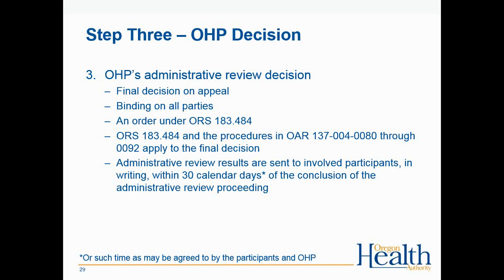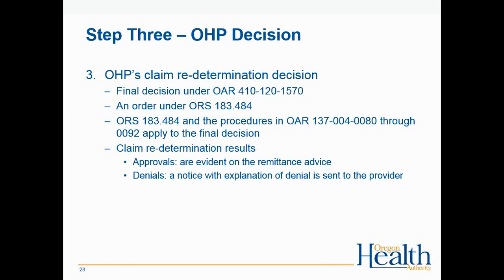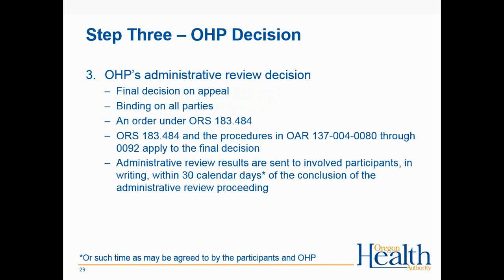For administrative review, step 3 is slightly different from claim redetermination. OHP's administrative review decision is final, binding on all parties, and is an order under Oregon Regulatory Statute. The applicable Oregon Regulatory Statute and procedures in Oregon Administrative Rules apply to the final decision. Administrative review results are sent to involved participants in writing within 30 calendar days of the conclusion of the administrative review proceeding.